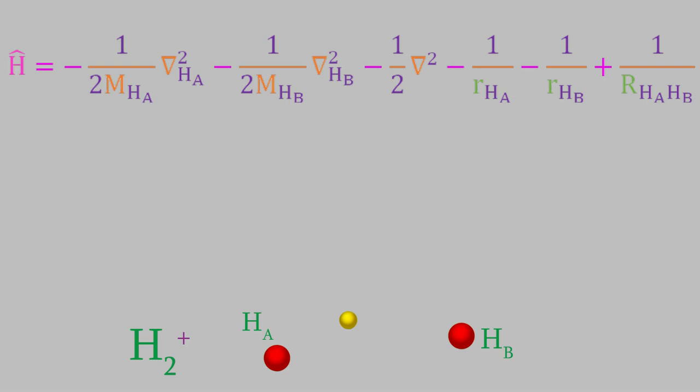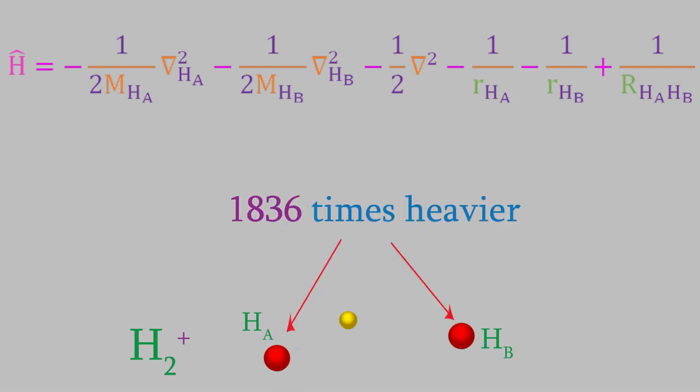Fortunately, there's a very common approximation we can make that'll make this Hamiltonian and all the others a little bit simpler. Think about the particles in this system: there's an electron and two nuclei. The nuclei are made of protons, and in larger atoms the nuclei would contain several protons and neutrons. As you might know, a proton is about 1836 times heavier than an electron. That means the electron can move much faster than a nucleus. In fact, in comparison to an electron, a nucleus is essentially motionless.